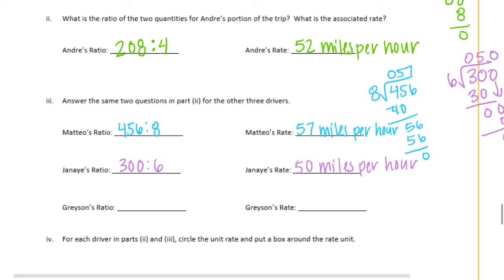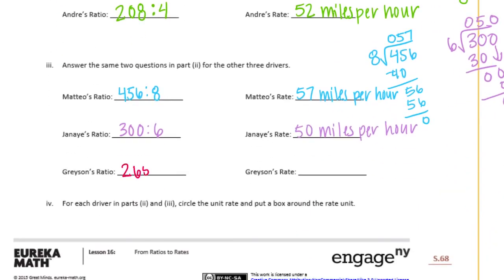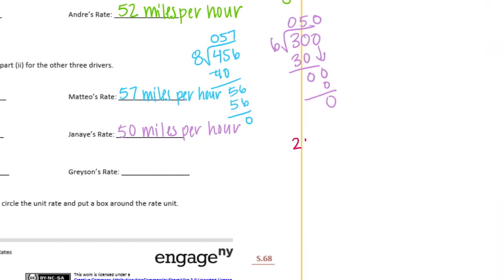And the last one, Grayson's ratio, was 265 to 5. Let's divide. 5 can't go into 2, but it goes into 26 five times. Subtract. Bring down the 5. 5 goes into 15 three times. So we get 53 miles per hour.